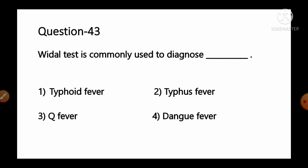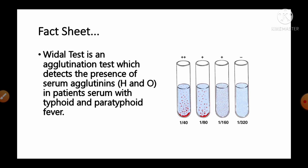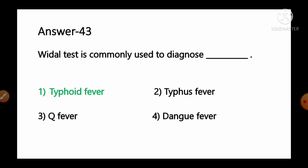Question number 43: Widal test is commonly used to diagnose — options: 1) typhoid fever, 2) typhus fever, 3) Q fever, 4) dengue fever. Widal test is an agglutination test which detects the presence of serum agglutinins — O and H antibodies — in the patient's serum with typhoid and paratyphoid fevers. So option number 1, typhoid fever, is the correct answer.